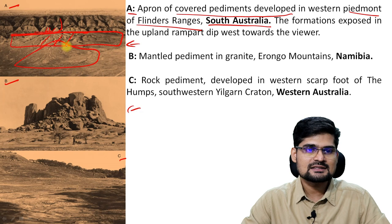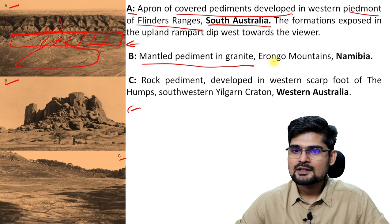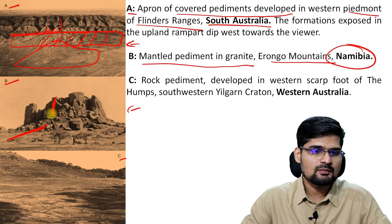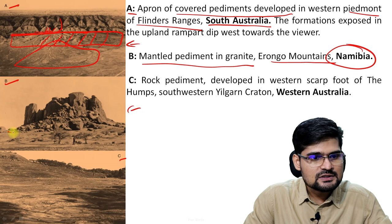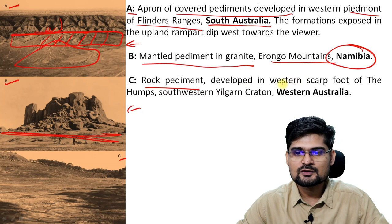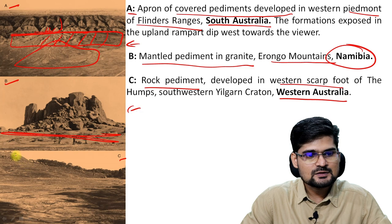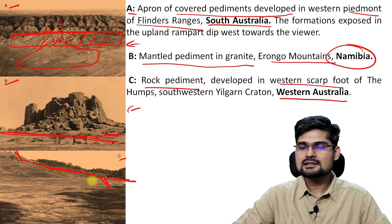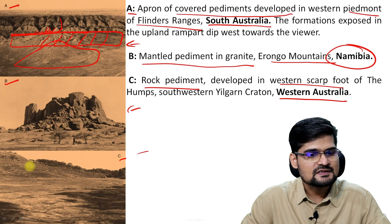Now a mantled pediment in granite — that is the Erongo Mountains in Namibia. This particular surface at the mountain front, with big boulders coming from the mountain itself — this is what you observe as a pediment again. And then you have a rock pediment developed in the western scarped foot of the Hump, which is in western Australia. Here is this particular face and then one degree down slope. So you see in images A, B, and C a clear picture of how the pediments look — how these erosional surfaces look.